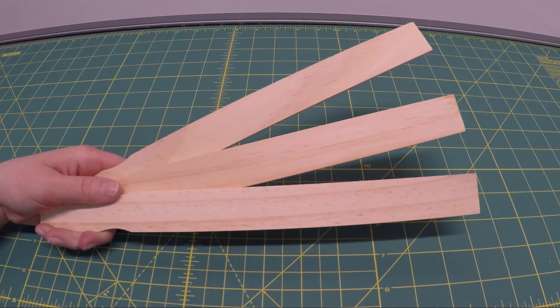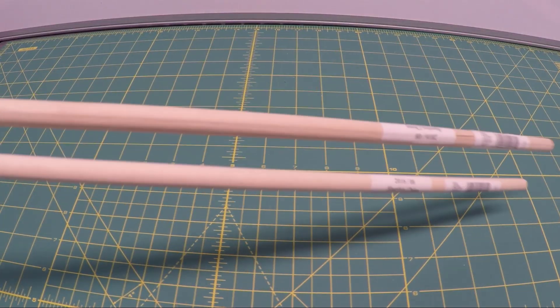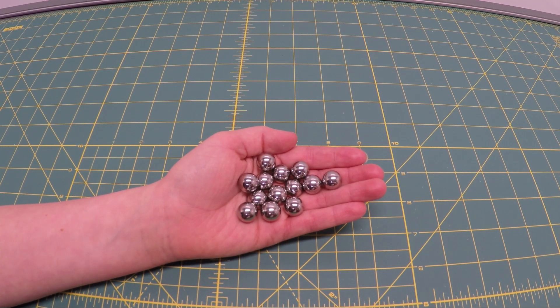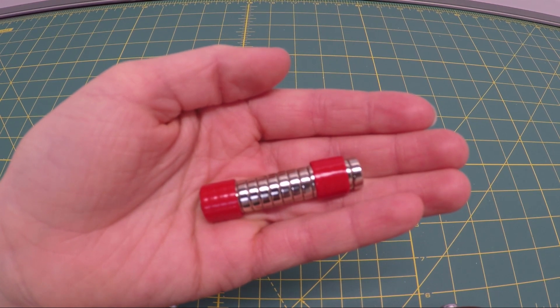This is what you'll need for this build. Three small paint stirrers. Two 3/8 inch by 36 inch long wooden dowels. 10 to 15 half inch steel ball bearings. 40 10 millimeter super magnets.